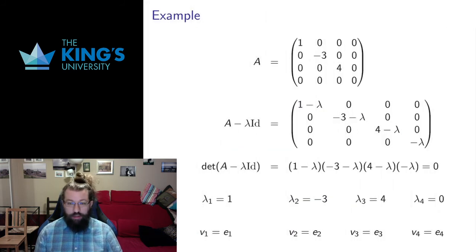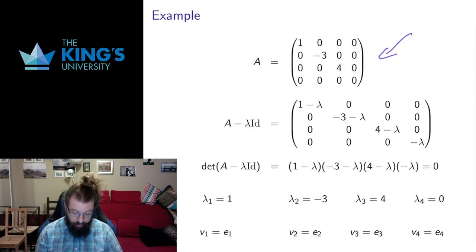Lastly, I talked about dilation matrices before. I just want to show you that if we apply the algorithm to a dilation matrix, we get what we expect. So here's a 4 by 4 dilation matrix. It dilates the first direction by 1, the second direction by negative 3, the third direction by 4, and it collapses the fourth direction entirely.